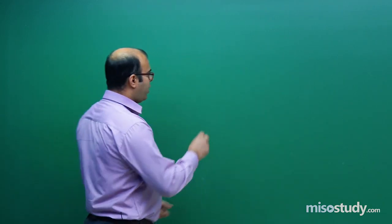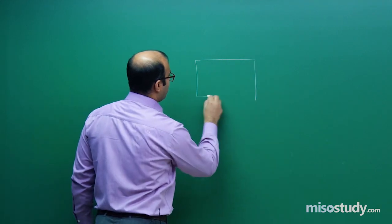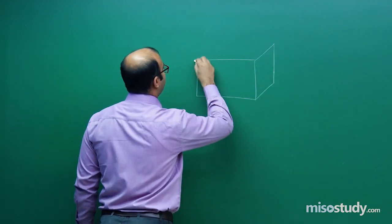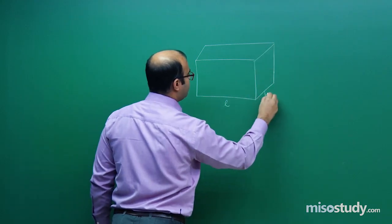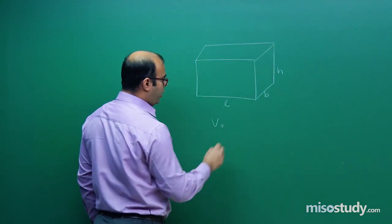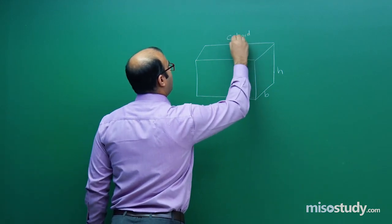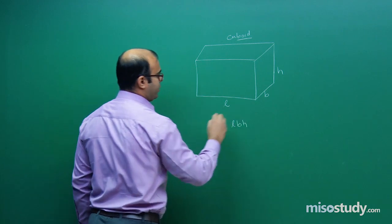First, we will review the individual volume formulas for each solid. The first figure is a cuboid. If a cuboid has a given length L, breadth B, and height H, then the volume of this cuboid is equal to length into breadth into height, that is L × B × H.